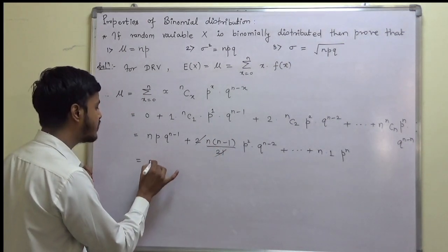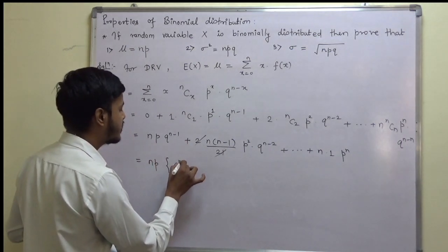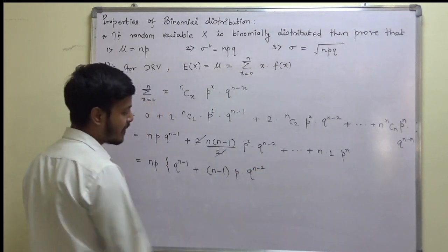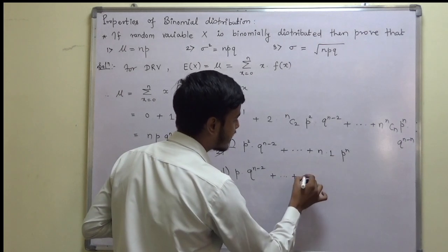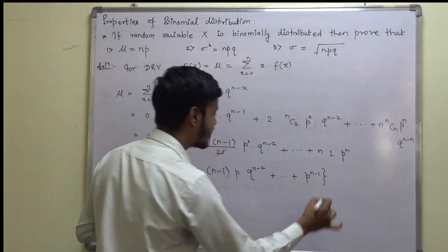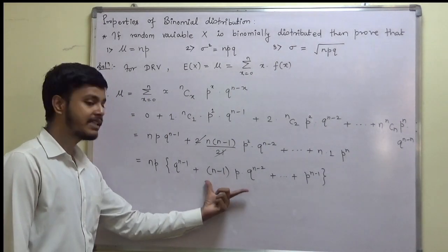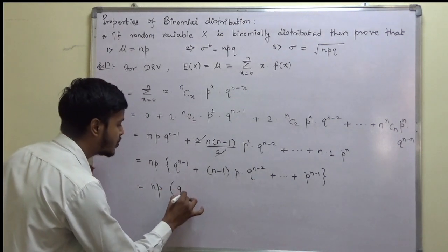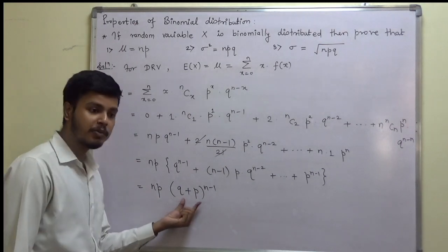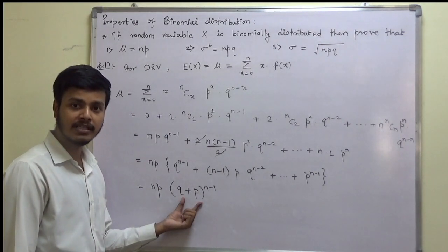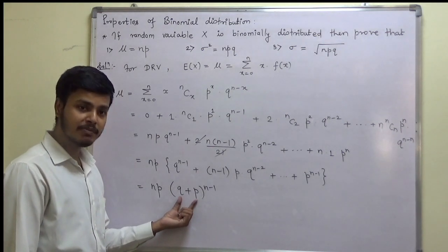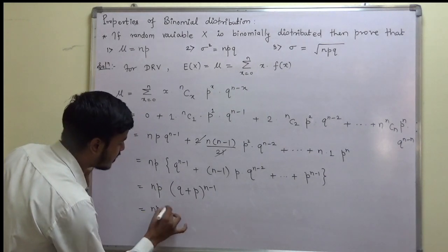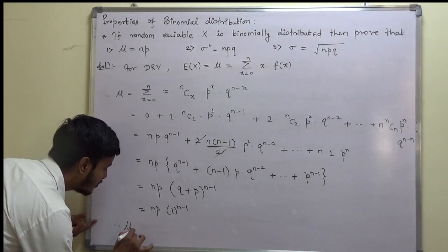Now as you can see throughout these terms, np is common. So I am taking np common, and we remain with q^(n-1) + (n-1)·p·q^(n-2) + ... + p^(n-1) outside. We have already seen that this is the binomial expansion of (q+p)^(n-1). So this is np · (q+p)^(n-1). Since q+p is the sum of probabilities in the binomial distribution and equals 1, we get mu = np · 1 = np.